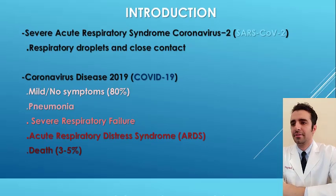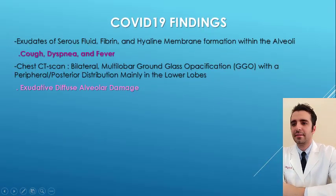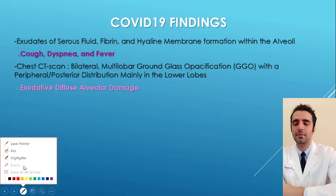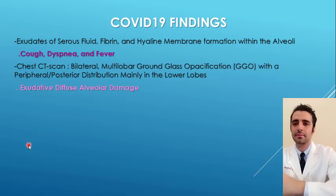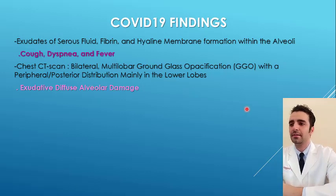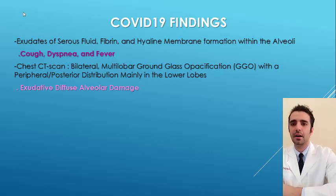SARS-CoV-2 attacks the respiratory epithelial cells, causing cough, dyspnea, and fever, which are the most common presentations of the disease. This virus induces exudates of serofibrin, fibrin, and hyaline membrane formation within the alveoli.